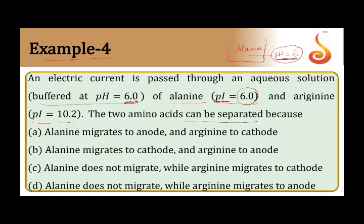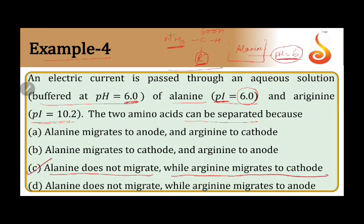Arginine, on the other hand, has pI = 10.2, meaning at pH 6 the medium is not basic enough for arginine to exist as a zwitterion. Rather, it exists with NH3+ and COOH groups, and because the R group of arginine gives it a positive charge overall, it will move towards the cathode. Therefore the two amino acids can be separated because alanine does not migrate while arginine migrates towards the cathode — that is, option C is the correct answer.